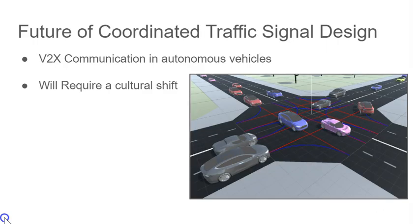The future of coordinated traffic signal design may look like intersections without any traffic signals. With the increase in autonomous vehicle technology, experts believe that through development of V2X communication, cars will be able to communicate on the network with other vehicles. This will allow vehicles to signal where they are and what movements they intend to make at the intersection. To obtain this theoretical limit, it will require a large cultural shift, as drivers must be willing to give up the control that traditional traffic signals offered to acquire a more efficient intersection.